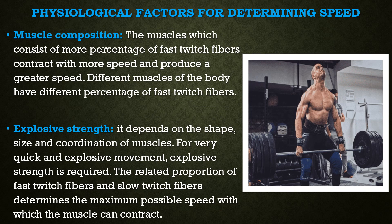Physiological factors for determining speed. First is muscle composition. Muscles with a greater percentage of fast twitch fibers contract with more speed in comparison to muscles with a lower percentage of fast twitch fibers. In fact, muscle composition is generally determined genetically and cannot be changed by training. Different muscles of the body have different percentages of fast twitch fibers, so different parts of the body have different speed performance.